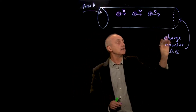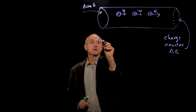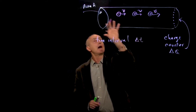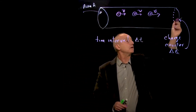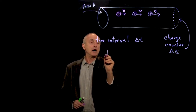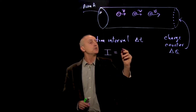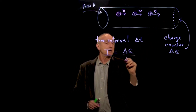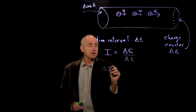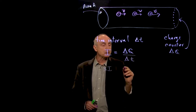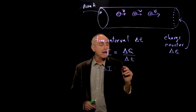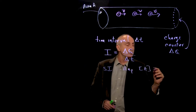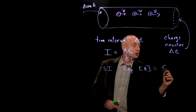Then we'd like to define a time interval delta t. As charges are moving through this area, we're counting the number of charges, and our definition of current i is equal to the amount of charge that crosses through this area divided by delta t. So in SI units, we have charges measured in coulombs, time is measured in seconds, and our definition for current — the amp, which we give the symbol A — is equal to coulombs per second.